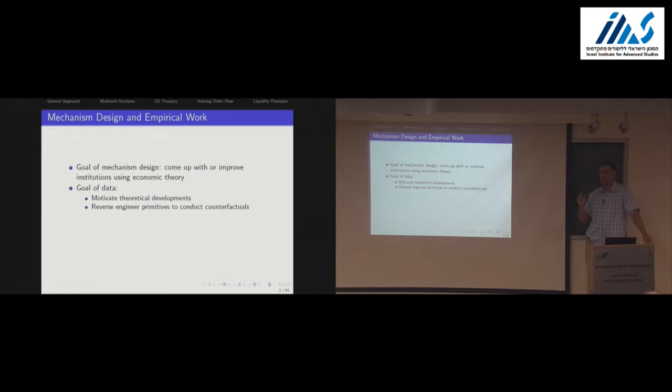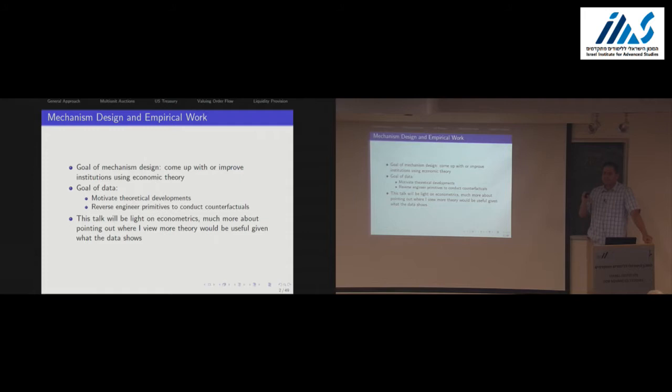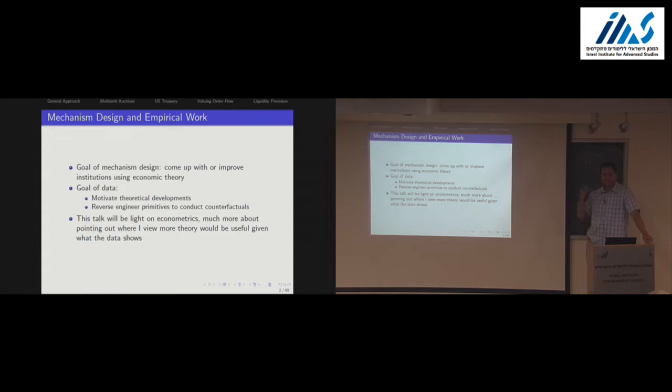The basic idea is: we will know the environment, we will know the mechanism, and we'll try to ask — with that knowledge — can we reverse engineer what the preferences must have been, perhaps what the information structure must have been, and think about what can be improved. Given this audience is mostly interested in theory, I will be very brief on econometrics and statistics. Most of what I'll focus on is the relationship between data and primitives, pointing out directions where more could be done from the theoretical side.